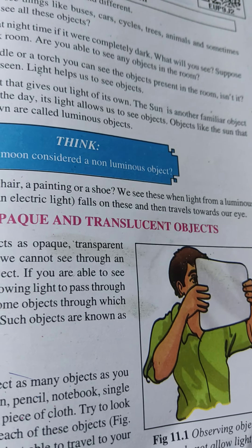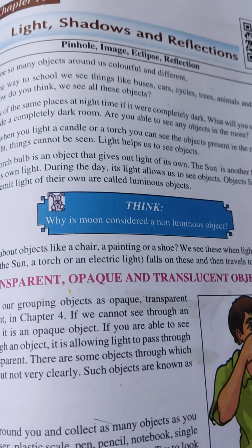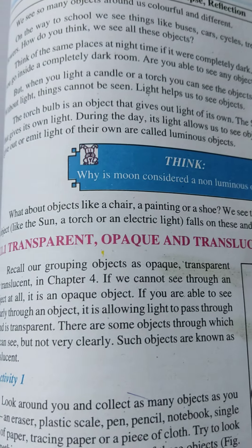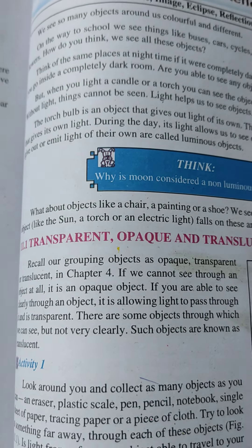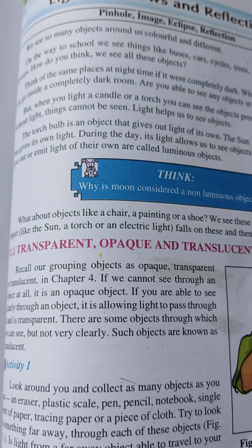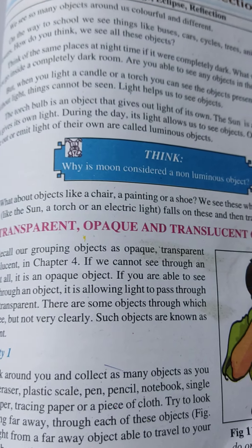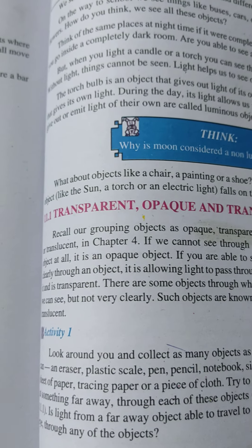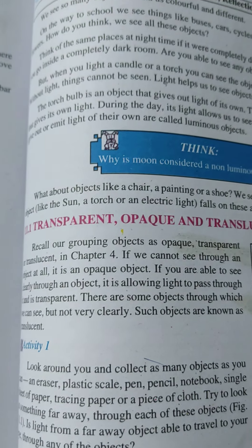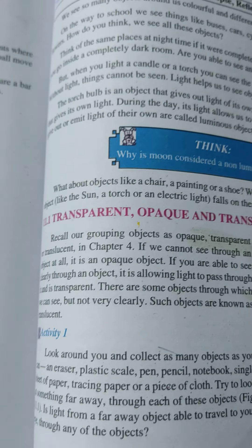How do you think we see all these objects? When we see all these things, what do you think? Think of the same places at night time if it were completely dark. When you see a dark night, you can find these things only in your mind.